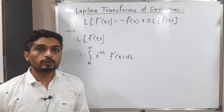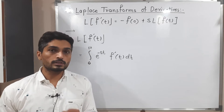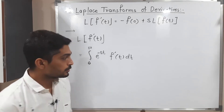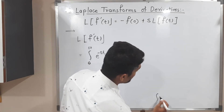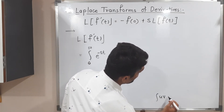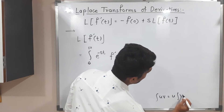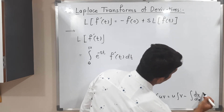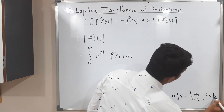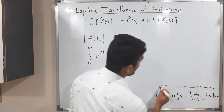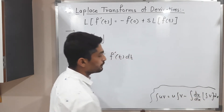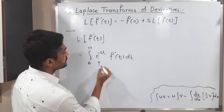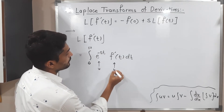Now we are going to solve this integration. Since there is a product of two functions, we use integration by parts: integral of u·v equals u times integral of v, minus the integral of (derivative of u times integral of v). Here, e raised to minus S T is our u, and F dash of T is our v.